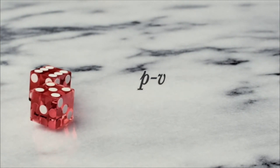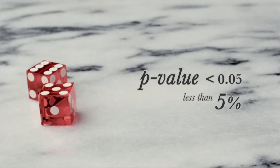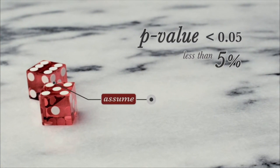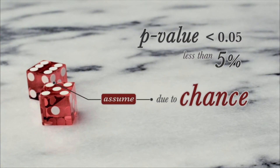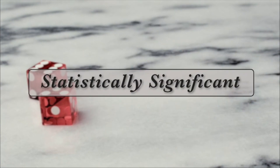Fisher also suggested a benchmark: only experimental results where the p-value was under 0.05 — a probability of less than 5% — were worth a second look. In other words, if you assume your results were just due to chance, you'd see them less than one time out of 20. He called those results statistically significant. Now, 'statistically significant' is a tricky term — you could be detecting a very, very small effect, but it would still be called significant in mathematical lingo.